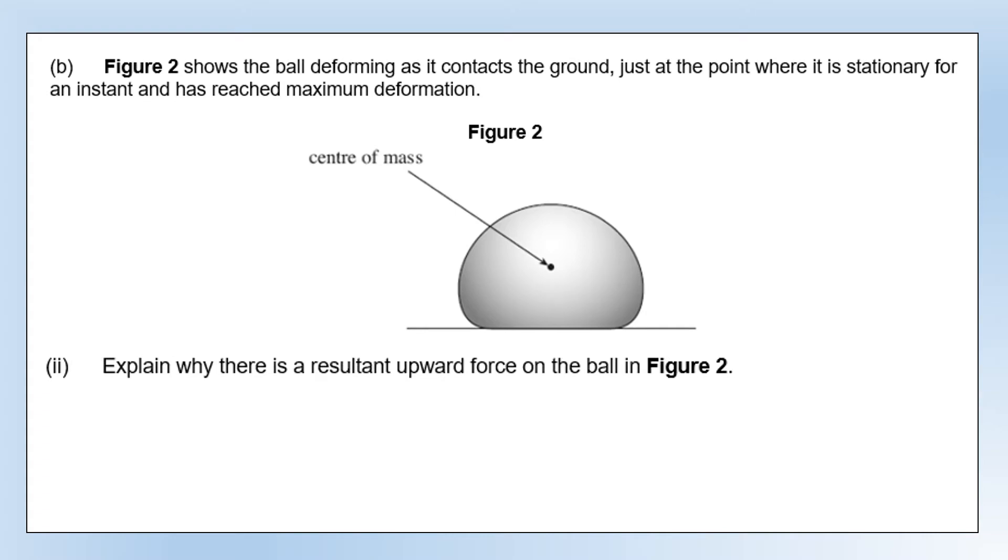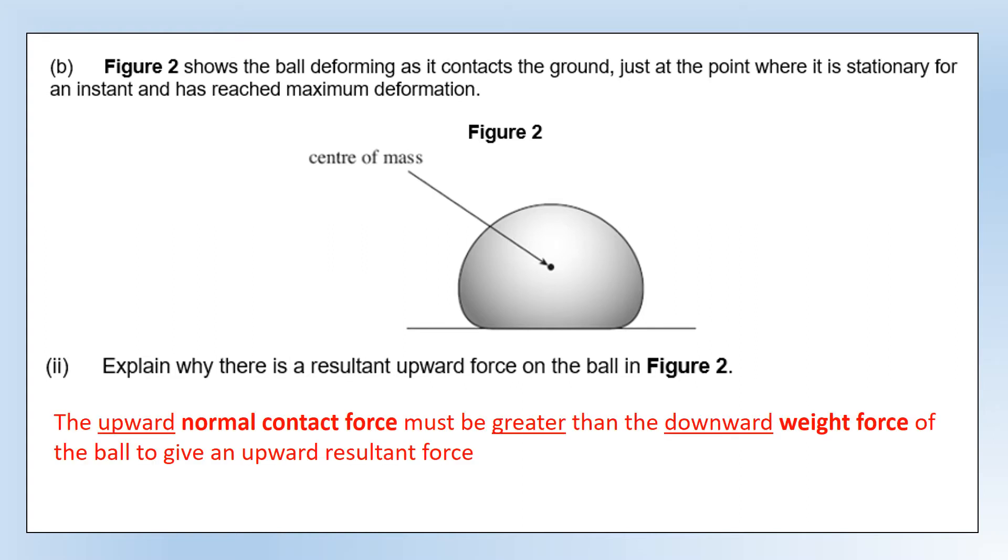Then it wants us to explain why there is a resultant force upward on the ball. What it must be is that the upward normal contact force acting on the ball from the ground must be greater than the downward weight force of the ball, and that's why the resultant force is upwards.